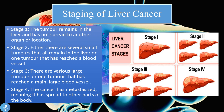Now let's talk about the staging of liver cancer. Stage one means the tumor remains in the liver and has not spread to another organ or location. Stage two means there are either several small tumors that remain in the liver or one tumor that has reached a blood vessel, as we can see in the image where one of these tumors has actually reached a hepatic blood vessel.